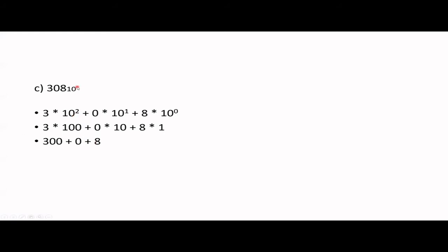Next: 308, base 10. Weighting factors: 10⁰, 10¹, 10². The digits are 3, 0, and 8. So 3 × 100, 0 × 10 — zero into anything is zero, don't worry about it — and 8 × 1. Remember, any number to the power 0 equals 1, such as 2⁰, 5⁰, 10⁰ — the answer is always 1. So 8 × 1 = 8, and 300 + 8 = 308. That's how these answers are obtained.